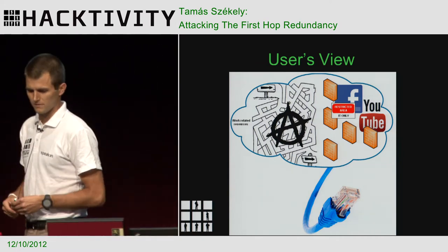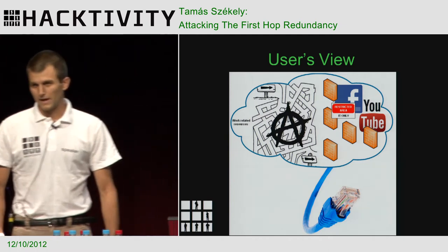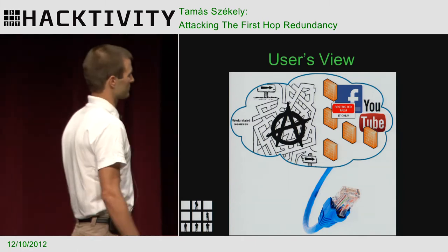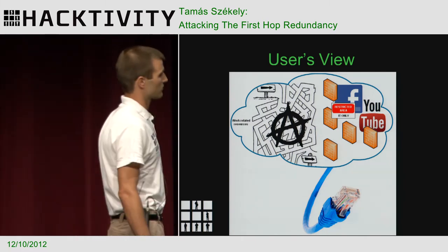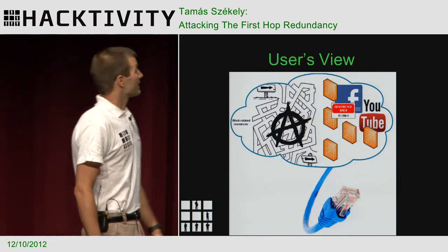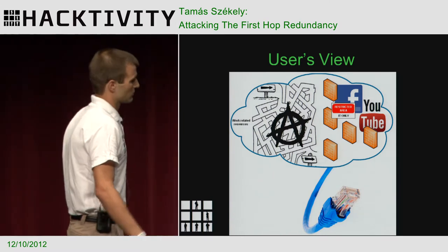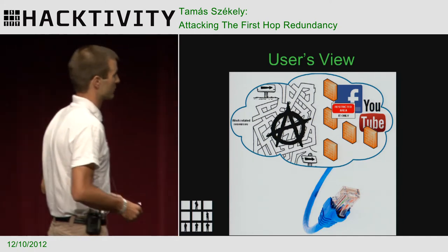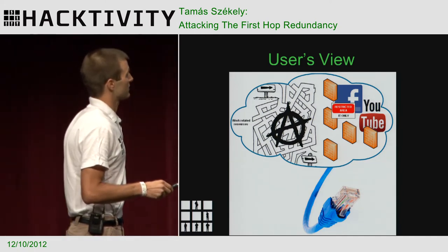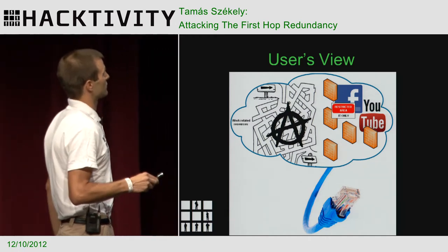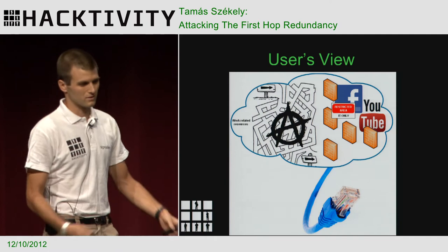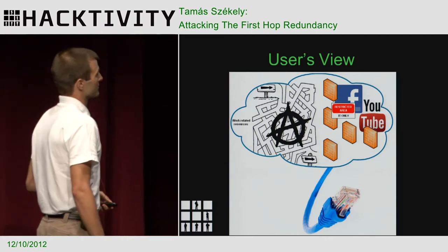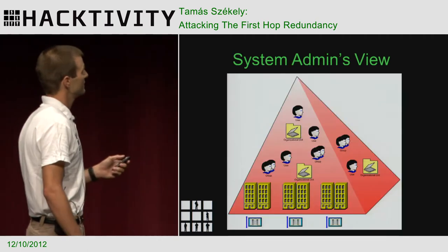The first slide is about how an average user views the network. It's not a detailed view. You just have an RJ-45 connector that you see — they don't even know it's an RJ-45, so they just call it a plug. Then you see a chaotic maze, and if things go well, he can access the resources needed for work, but the best resources are of course banned because of the firewall — no Facebook, no YouTube. That's only for managers. His view on network redundancy is just minimal.